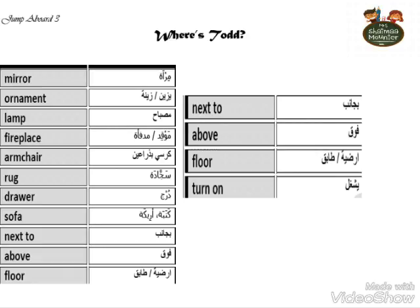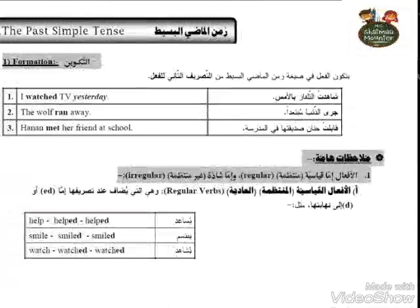Now let's move to another part. The past simple tense is the simple past tense, formed using the second form of the verb. For example: 'I watched TV yesterday' and 'The wolf ran away.' Here, 'watched' is in the past because the base verb was 'watch,' and 'ran' is also past because the base verb was 'run.'